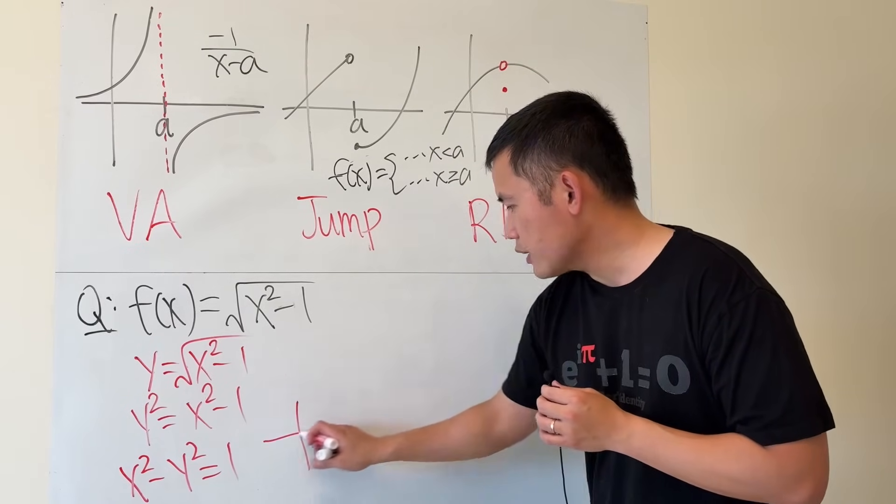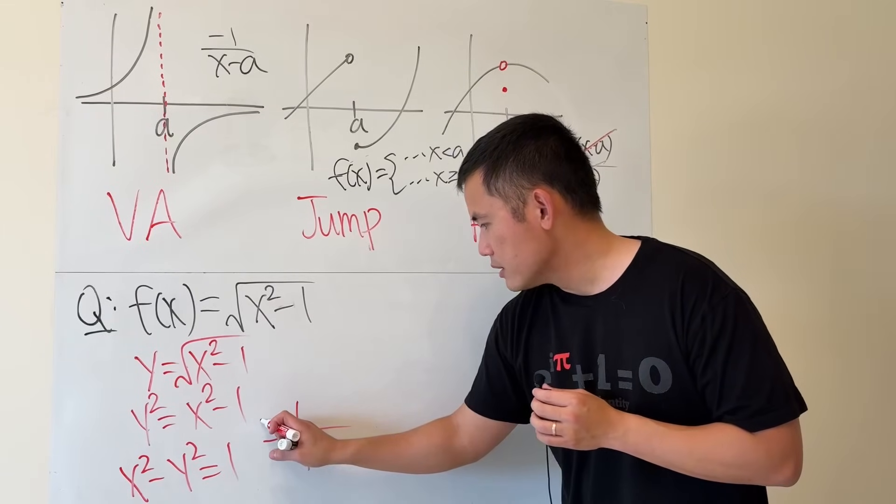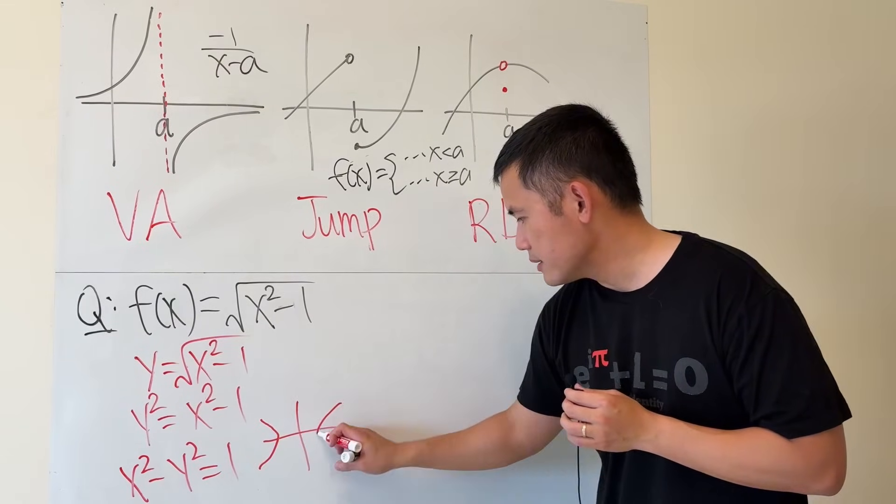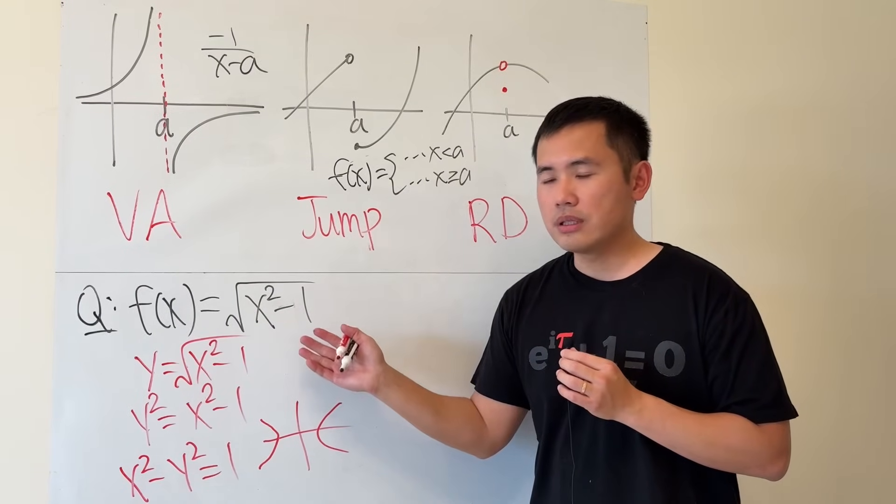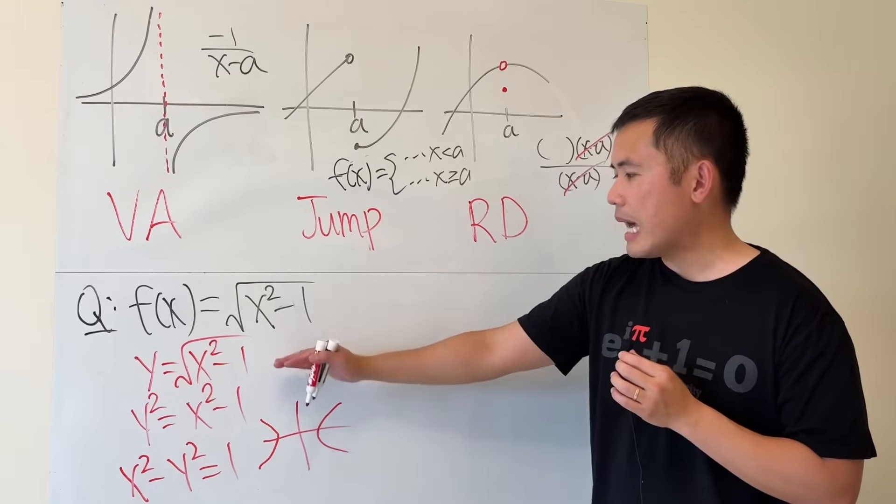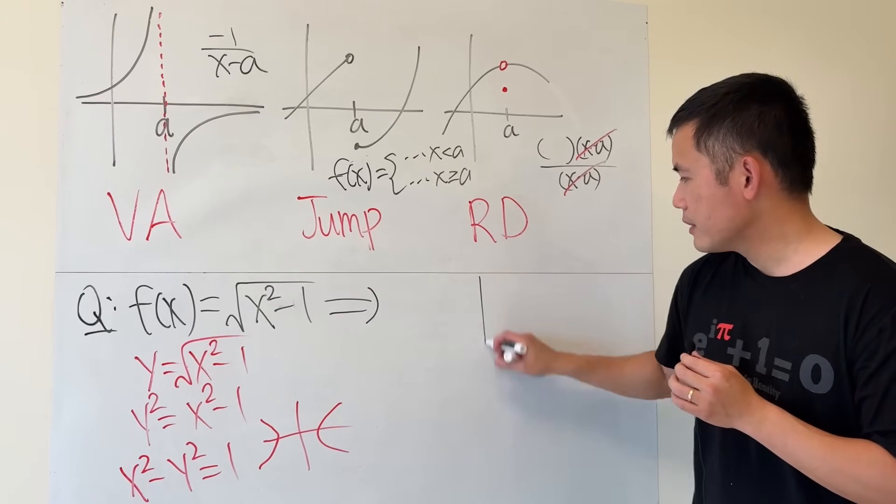So if you look at this, you actually have a hyperbola. Because x is going first, so it goes left and right like this. But f of x is the square root, it's just a positive square root. So we just have the top portion. So this right here is the graph like this.